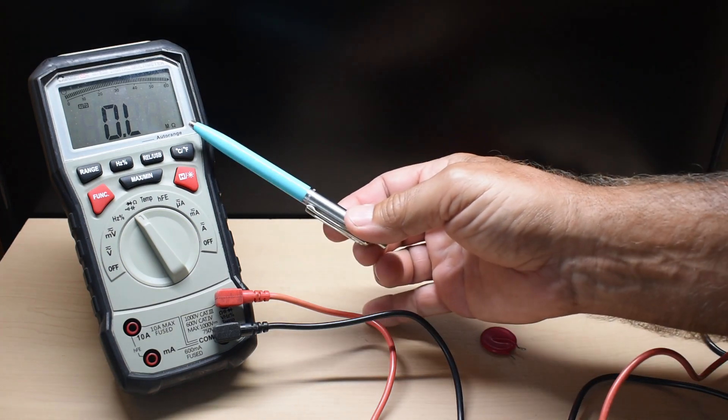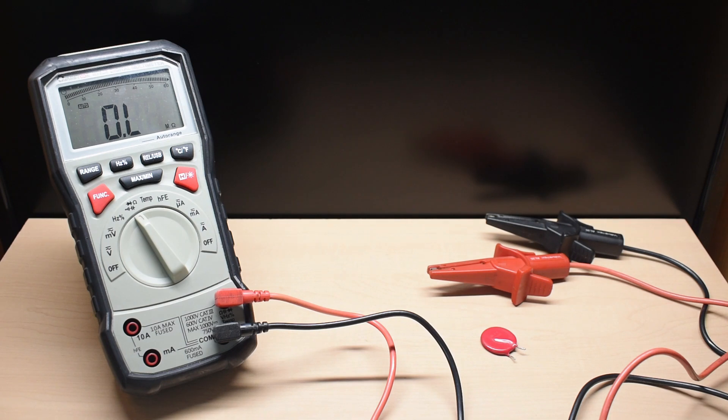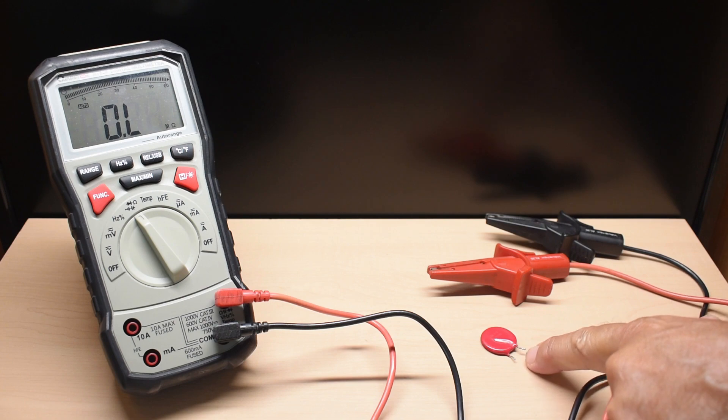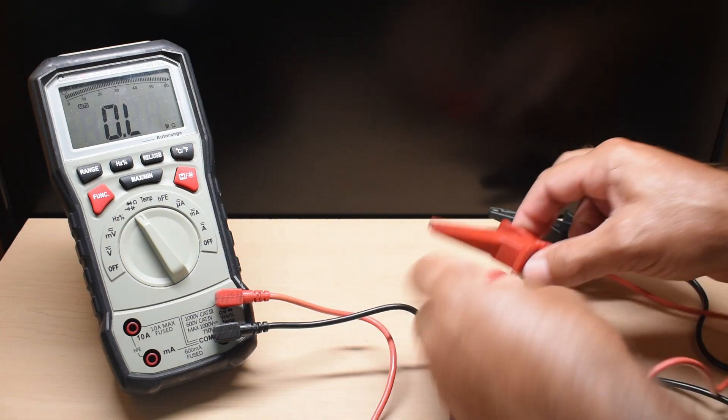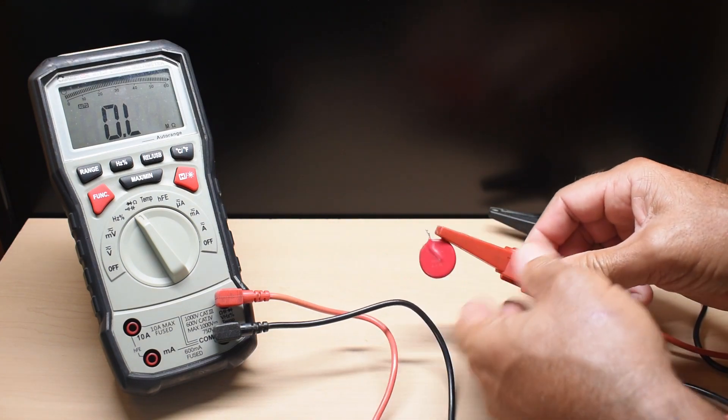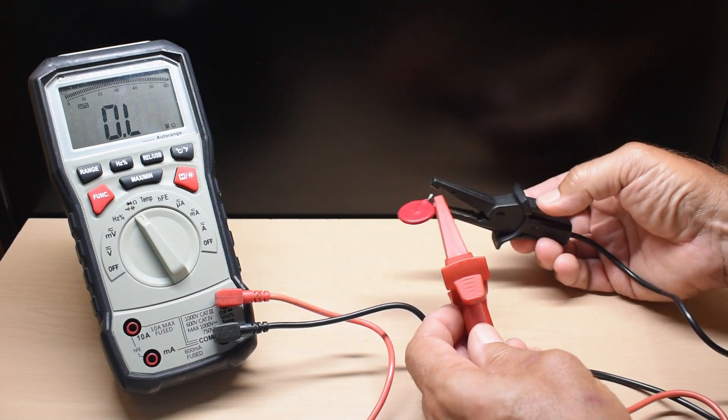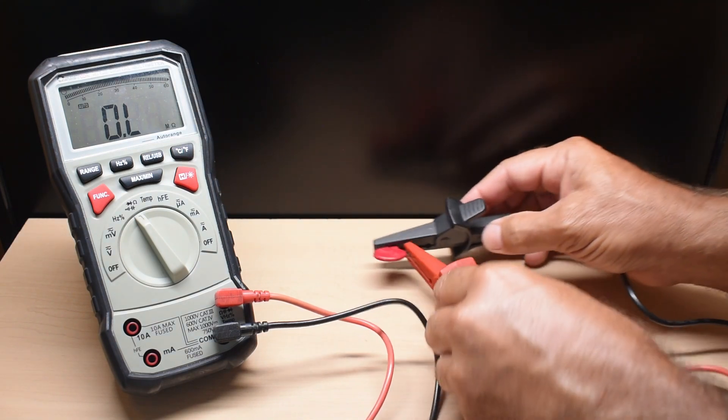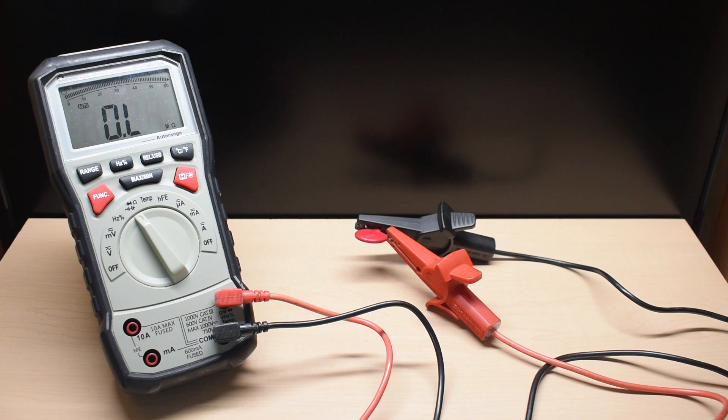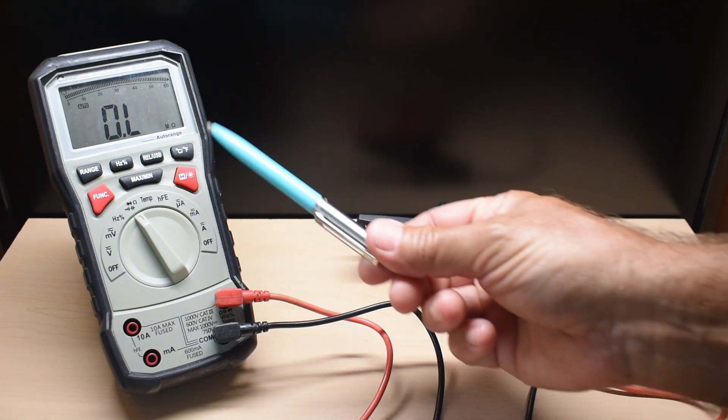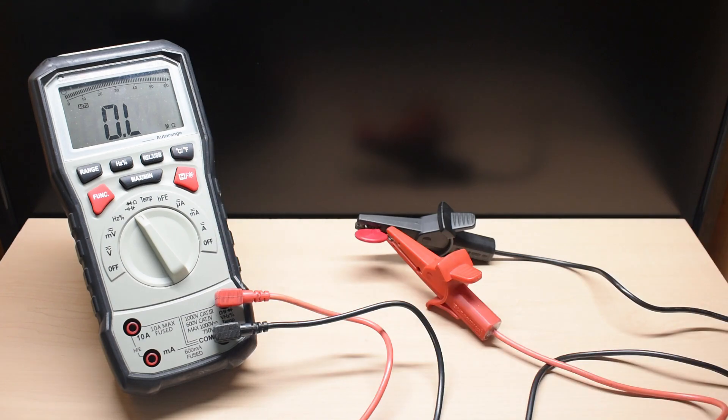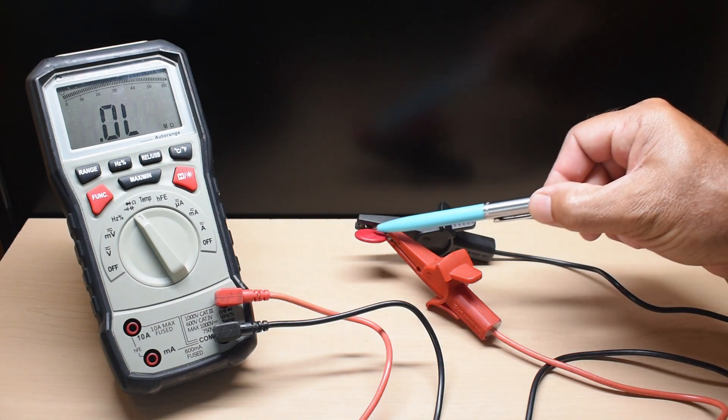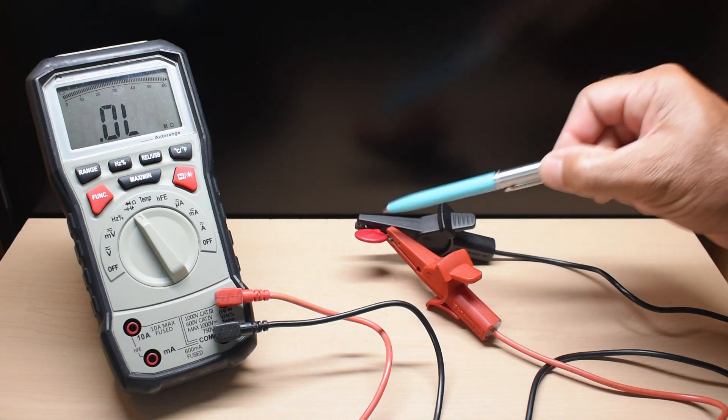Over here, you can see the meter is set for a megaohm range. And just to show you that there's no continuity in any way between these two pins, I'm going to connect it up right here. And as you can see, there's no change on the meter here, indicating basically an open circuit for this component.